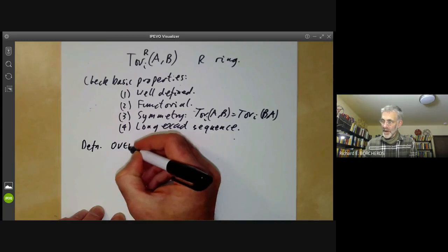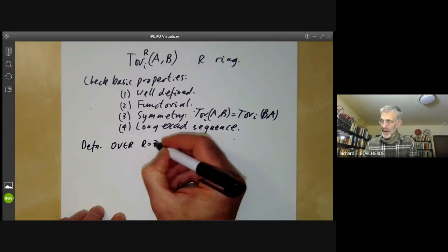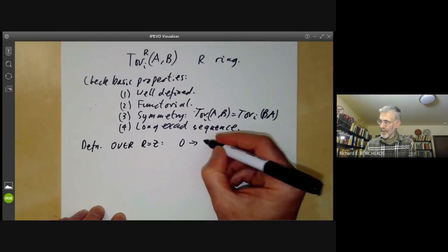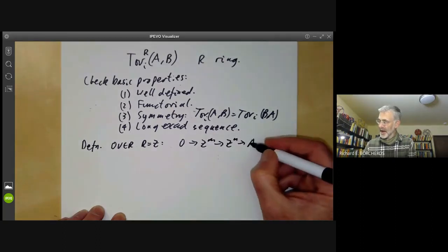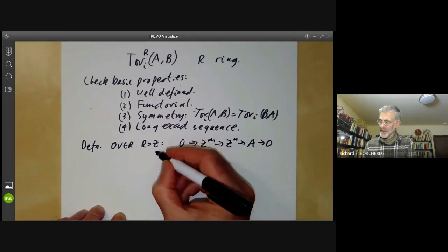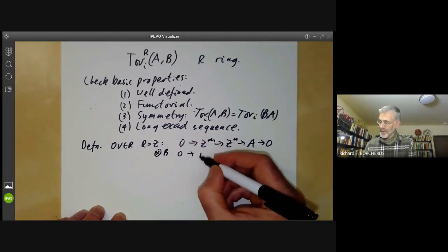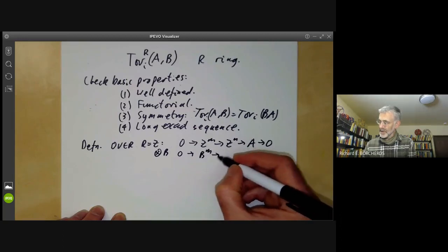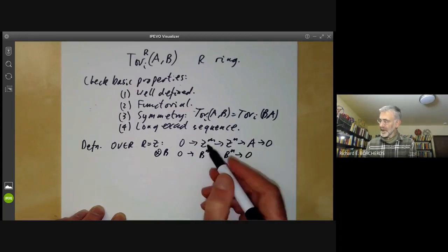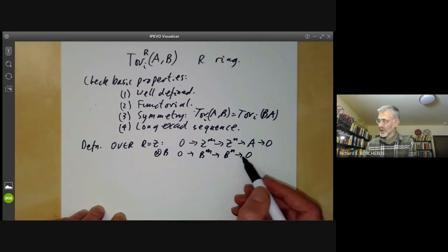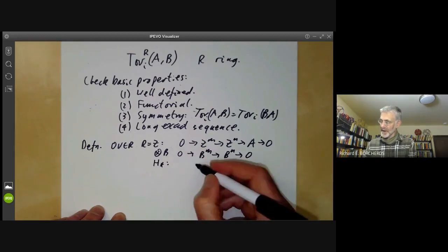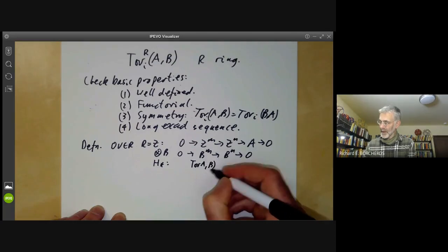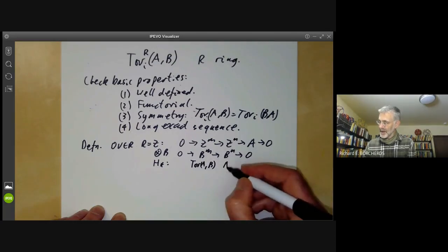Over R equals Z, it's very easy. You take a presentation of A and then tensor it with B, and we get 0 goes to B^m goes to B^n goes to zero. This sequence is exact, but after replacing A with zero it is not exact. We then take the homology groups of this, and the homology groups are Tor(A, B) and A tensor B.